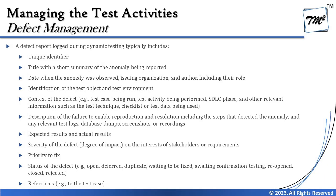A description of the failure should be included, going beyond the one-line title to provide all details for thorough understanding of the issue. This can include relevant test logs, database dumps, screenshots, or video recordings. Expected results and actual results should also be captured. Additionally, severity — the impact of the defect on the system or end user — and priority to fix — the urgency to resolve the issue, indicating what should be fixed first compared to other defects — are both included.